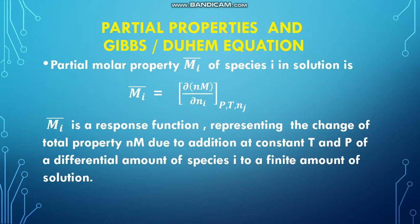The partial molar property Mi bar of species I in solution is defined as Mi bar is equal to dou of Nm by dou Ni at constant pressure, temperature, Nj. Mi bar is a response function representing the change of total property Nm due to addition at constant temperature and pressure of a differential amount of species I to a finite amount of solution.